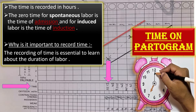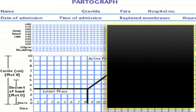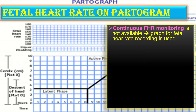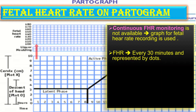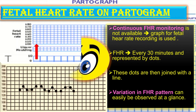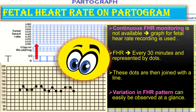Regarding fetal heart rate on the partogram: when continuous fetal heart rate monitoring is not available, the graph for fetal heart rate recording is used. The fetal heart rate is recorded every 30 minutes and is represented as a dot; these dots are then joined with a line. The advantage is that variation in fetal heart rate pattern can be easily observed at a glance.